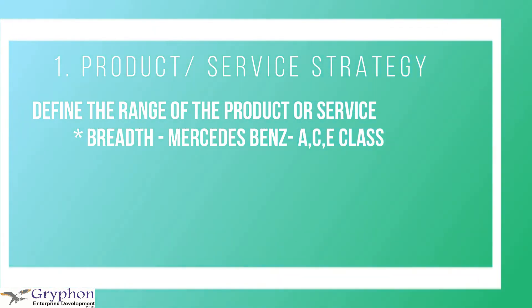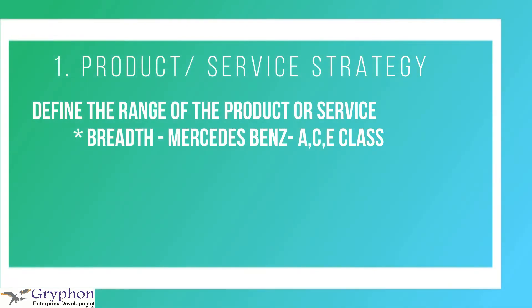After you've listed the features and benefits of your products and services, define the range of the product or service. The range includes breadth and depth. For example, if you consider a motor car like the Mercedes-Benz, the breadth of the range would be whether you have an A-Class, C-Class, or E-Class. The depth is taking each of those classes — for example, the A-Class — and identifying all the different models within it, whether it's diesel or petrol and what features each has.